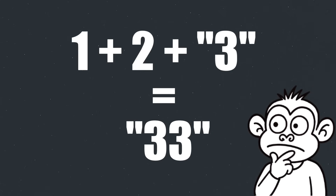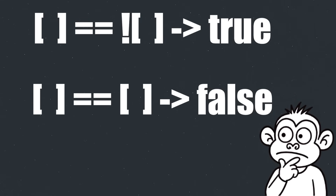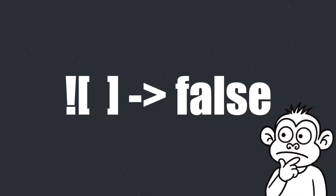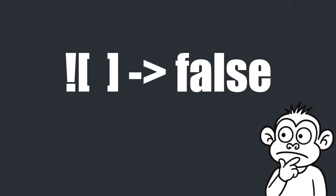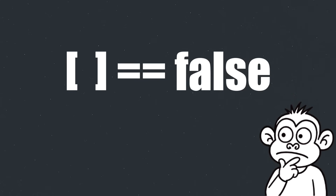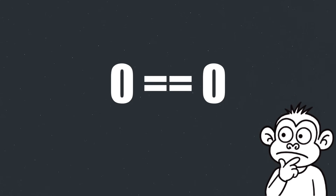Remember that bizarre behavior from the beginning? Here's the explanation. The expression is evaluated left to right: first, one plus two gives three. Then JavaScript notices it's adding a number to a string, so it coerces the number into a string and concatenates — thus string three plus string three equals string '33'. Totally makes sense, right? And for the array comparison: not-empty-array evaluates to false because an empty array is a truthy value and the not operator negates it, so we're comparing an empty array to false. JavaScript coerces both sides to numbers — false becomes zero, and an empty array also gets coerced into zero — so we end up with zero equals zero: true.